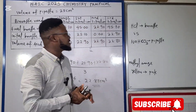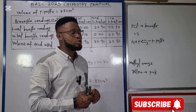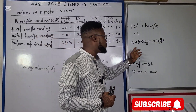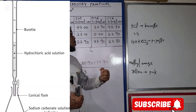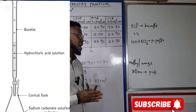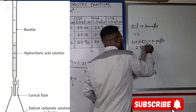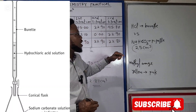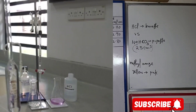This year's experiment is a titration between dilute hydrochloric acid and sodium hydrogen carbonate. We are going to pipette a known volume of sodium hydrogen carbonate — usually 20 cm³ or 25 cm³, but in most cases what is in vogue now is the 25 cm³ pipette.